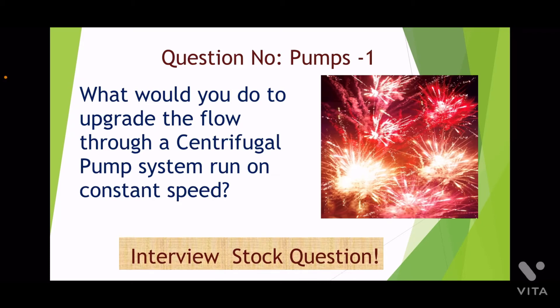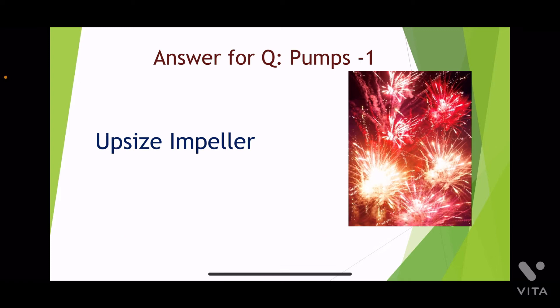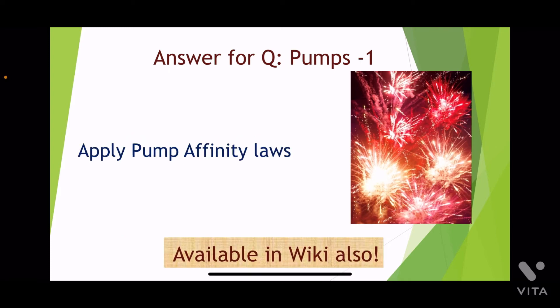Hi friends. What would be the options to upgrade the flow through a centrifugal pump run on constant speed? This is an interview stop question. The answer would be to upsize the impeller. You probably know the pump affinity laws already. If you don't know, you will come to know by the end of this video. Stay on.